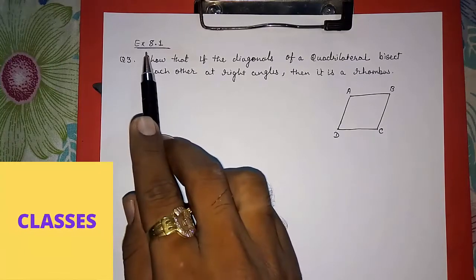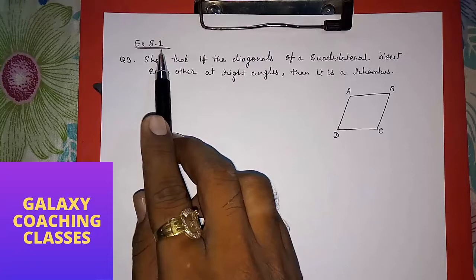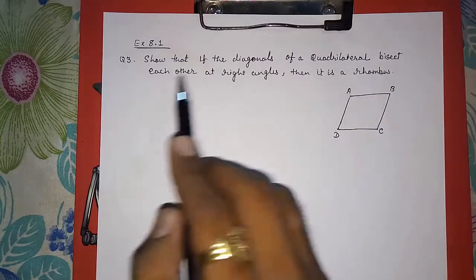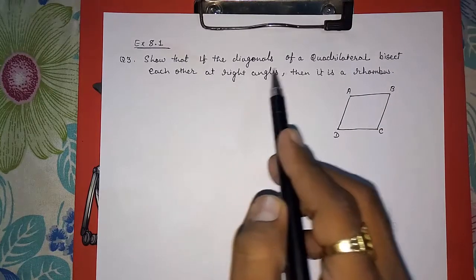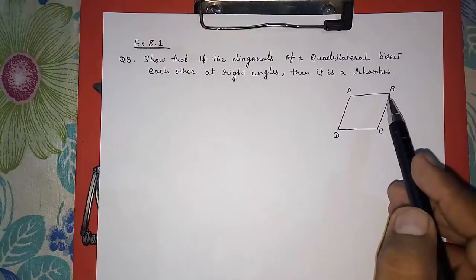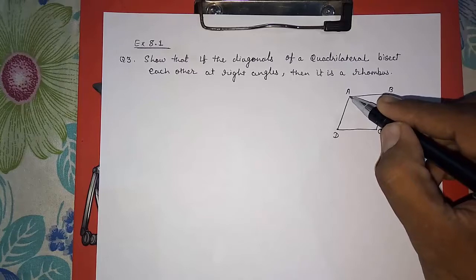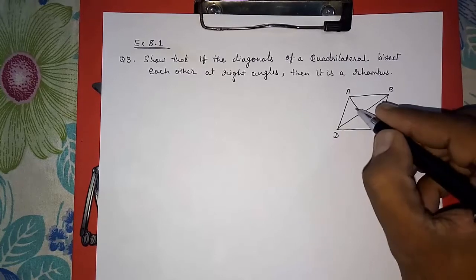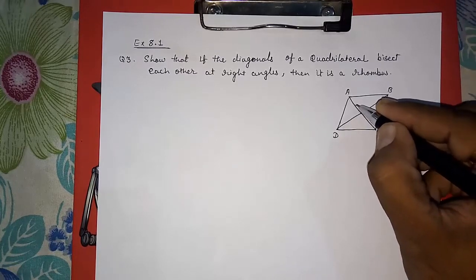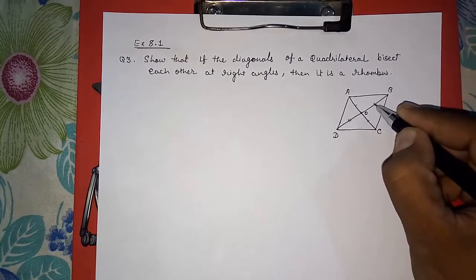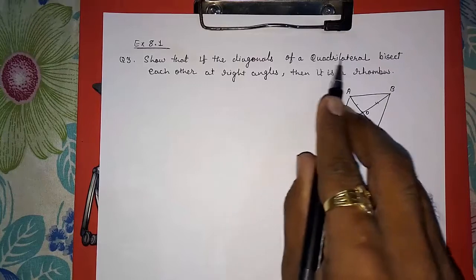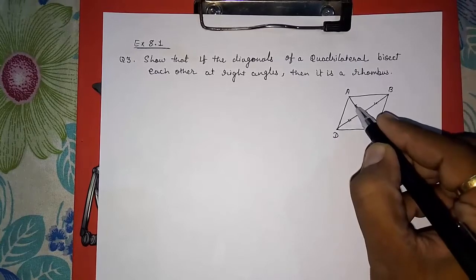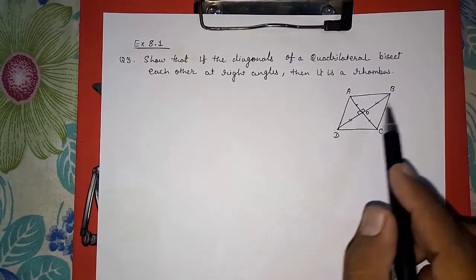Hello friends, today we are going to solve Exercise 8.1, Chapter 8, Quadrilaterals, Question 3: show that if the diagonals of a quadrilateral bisect each other at right angles, then it is a rhombus. We have a quadrilateral ABCD where diagonals AC and BD bisect each other, meaning AO equals CO and BO equals DO, and the diagonals are at right angles to each other.